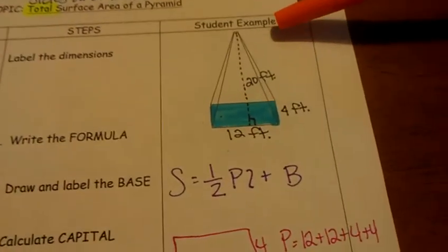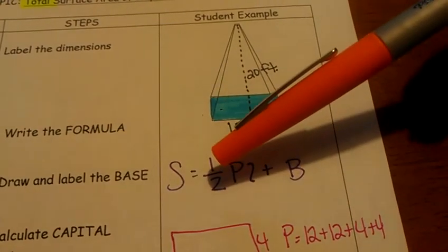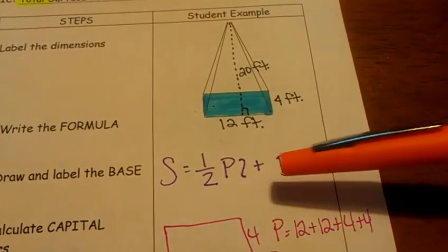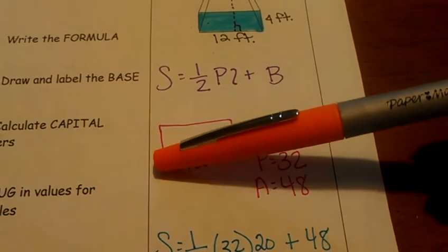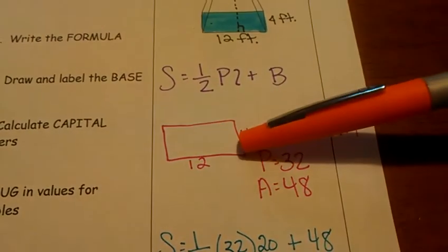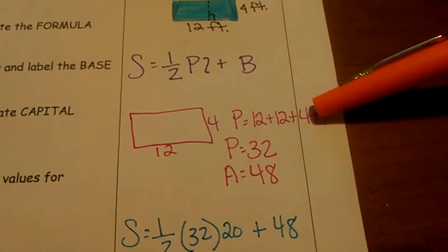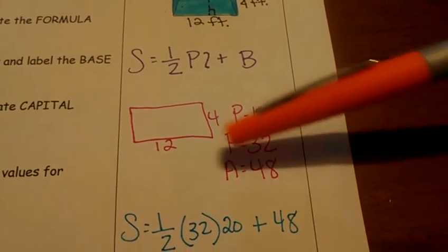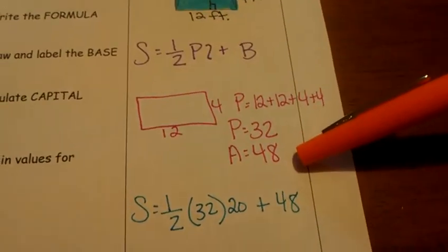Last example. I've got a rectangular pyramid here. Step number one, write your formula. One-half perimeter of the base times your slant height plus area of the base. Step number two, draw and label your base. It's a rectangle, a 12 by 4 rectangle. So my perimeter is 12 plus 12 plus 4 plus 4, which is 32 when you add that all up. Now your area is just length times width or base times height. 12 times 4 is 48.